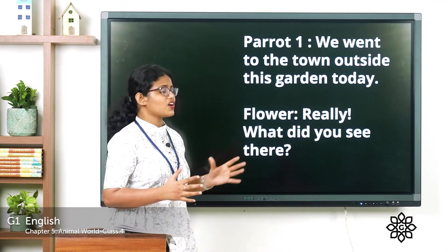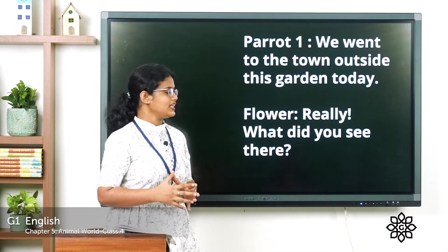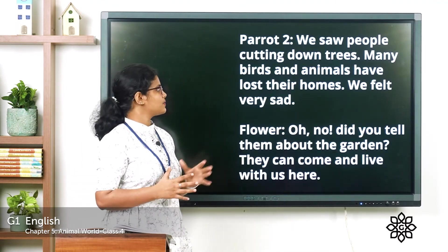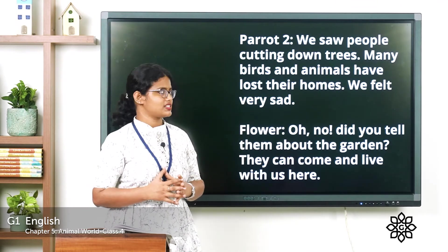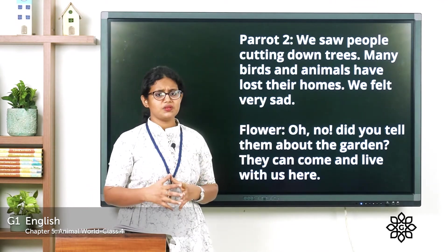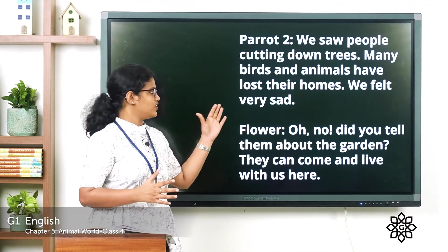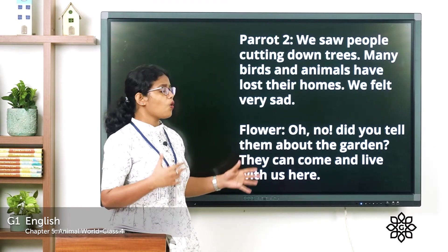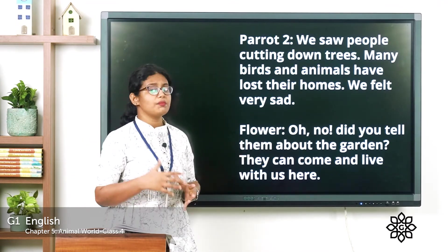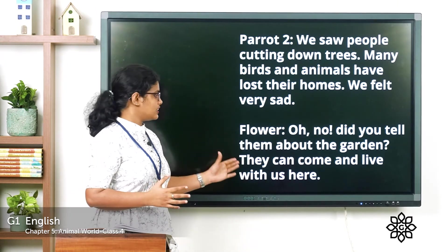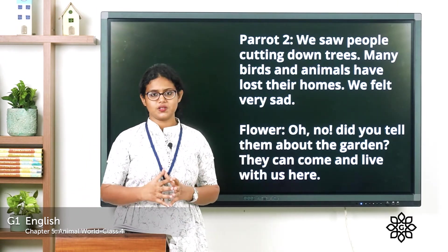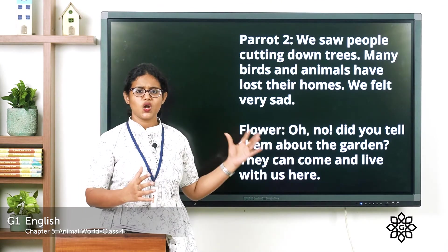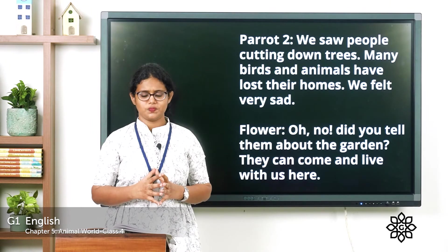The flower replies: 'Really! What did you see there?' The second parrot says: 'We saw people cutting down trees and plants. Many birds and animals have lost their homes. We felt very sad.' The flower replies: 'Oh no! Did you tell them about the garden? They can come and live with us here.' You can also read this conversation.